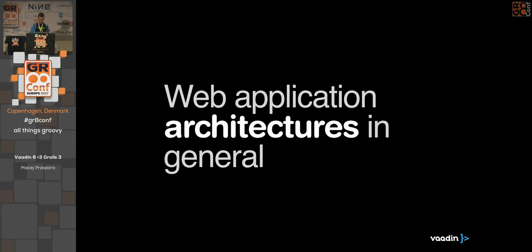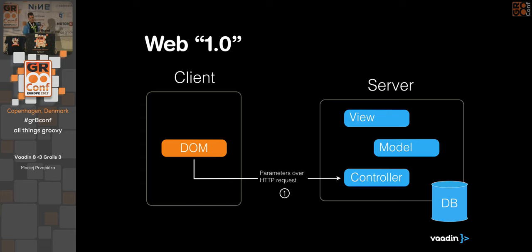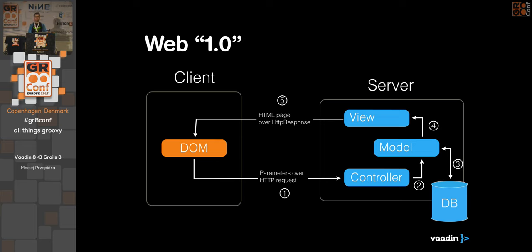Let's talk about web application architectures in general. This is the traditional way: we have the document object model in the browser, model-view-controller on the server side, and a database. When the user interacts with the DOM — clicks something, fills in a form and clicks submit — parameters are sent over an HTTP request to the server. A front-side controller parses it, makes changes to the model, fetches data from the database, generates a new page, and sends it back via HTTP response. Not very efficient — there's a lot of HTTP traffic and a full page reload.